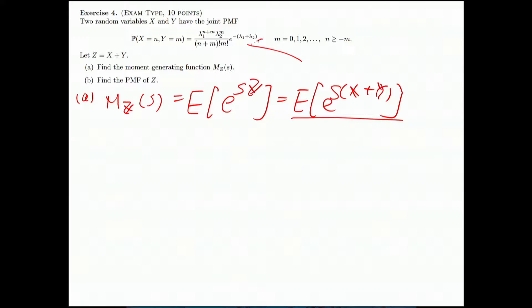Now we have a joint PMF, so it's a double summation. First is m equals zero to infinity, then n equals zero to infinity. And whatever's inside, I plug in the joint PMF, which is λ₁^(m+n) λ₂^m divided by (m+n)! times m! times exponential minus λ₁ plus λ₂.